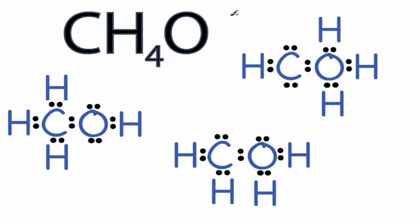For the CH4O Lewis structure, we have 14 valence electrons. There are a number of ways to draw the Lewis structure for CH4O in which each of the atoms has a full outer shell and we only use 14 valence electrons. I've drawn three here.